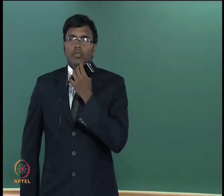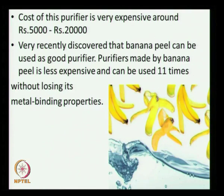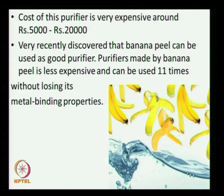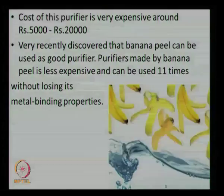The cost of the purifier is very expensive, around rupees 5000 to rupees 20000. Coming to improvements: it has very recently been discovered that banana peel can be used as a good purifier. Purifiers made from banana peel are less expensive and can be used 11 times without losing their metal-binding properties.